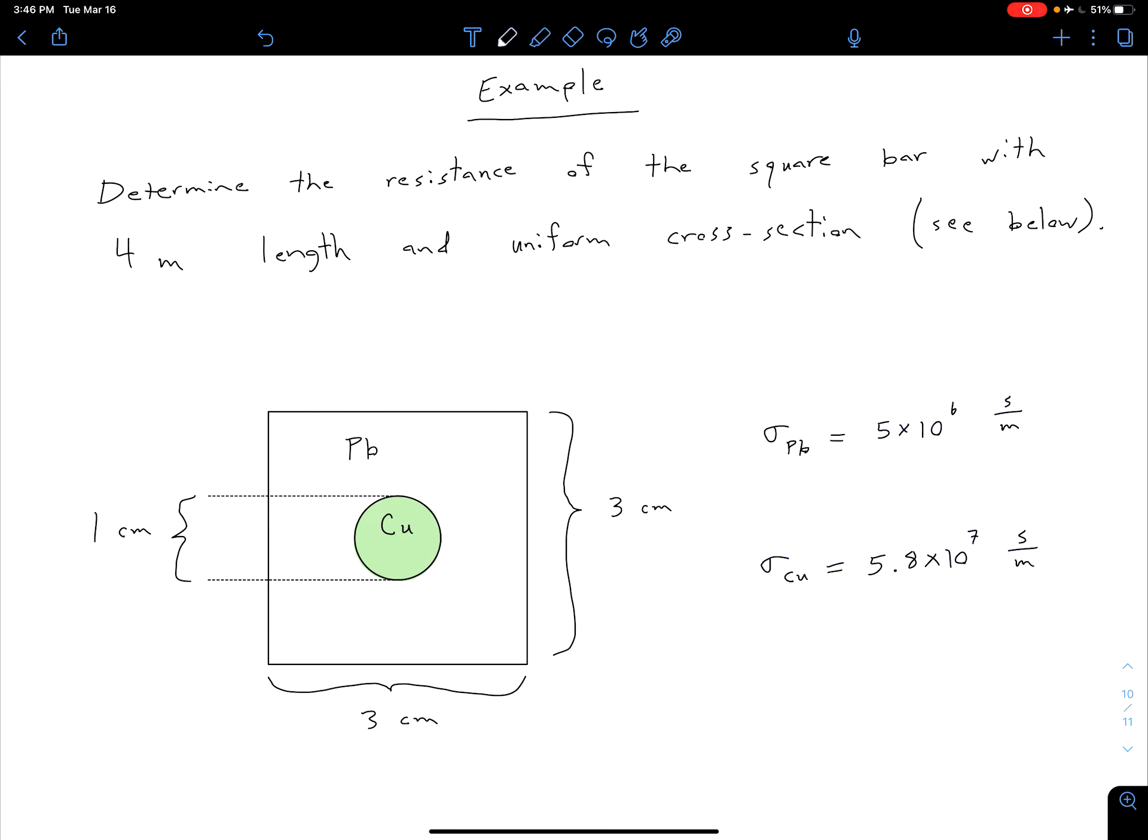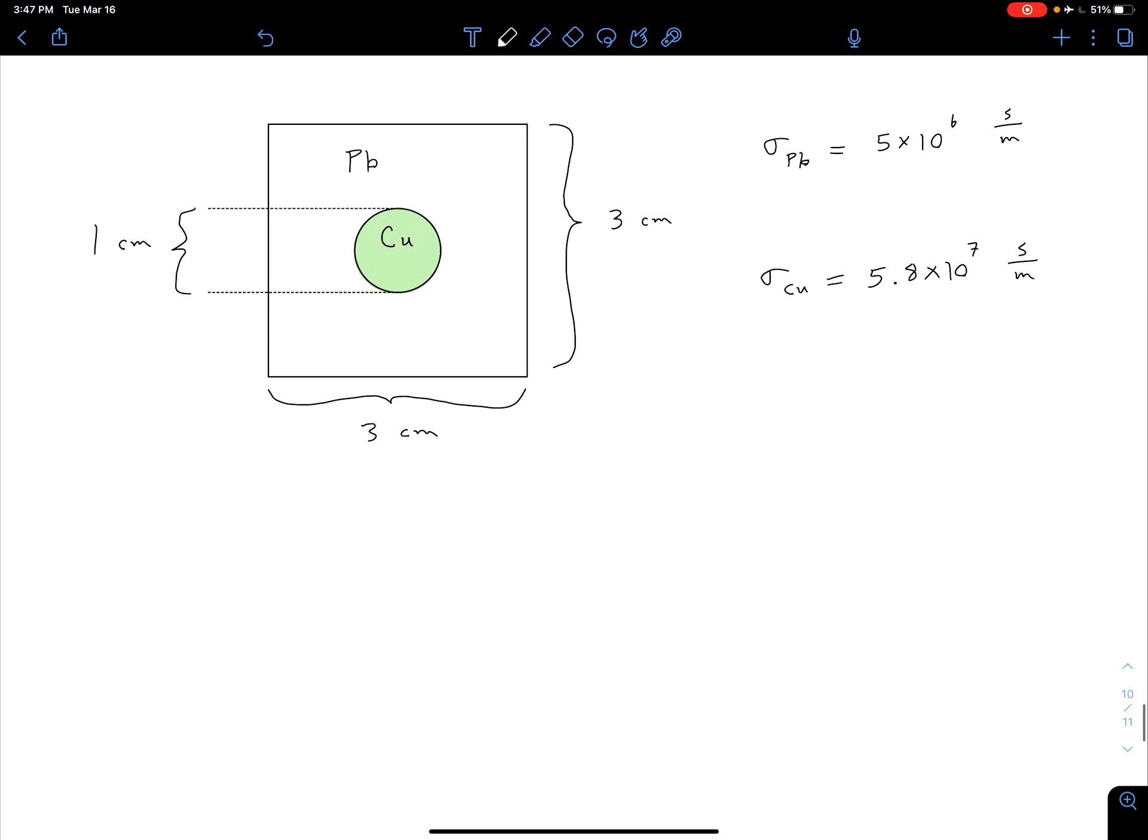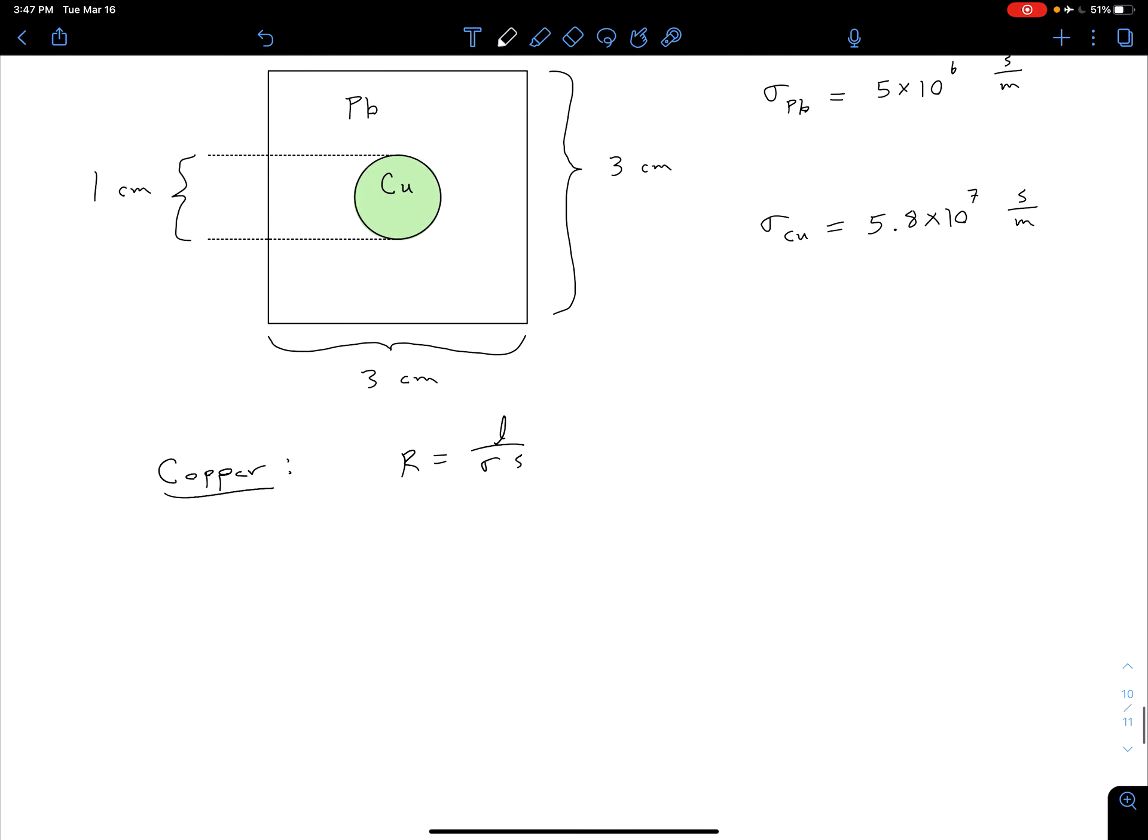What we need to do is find the conductivity of these two segments. We can think of it as two different paths. Let's start by looking at our copper segment. For our copper segment, we have R is equal to L over our conductivity, so sigma times S.